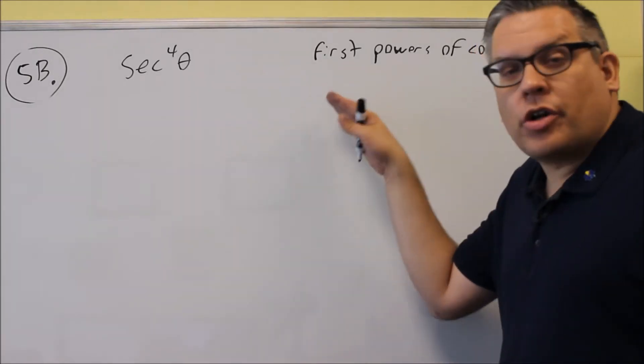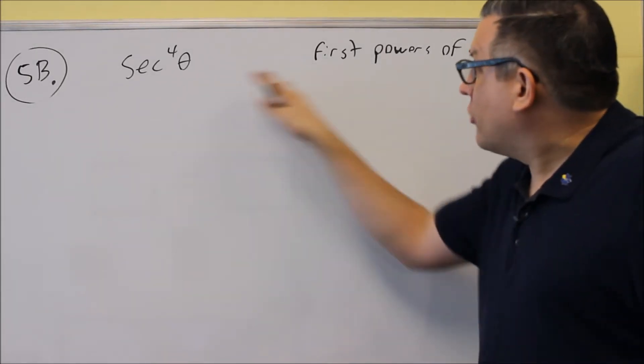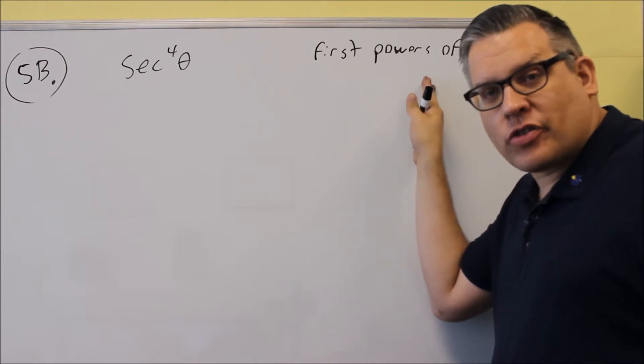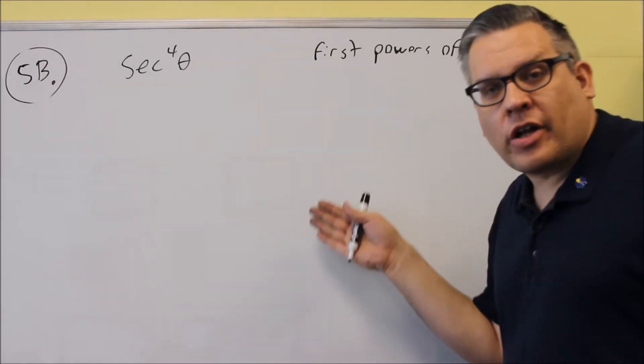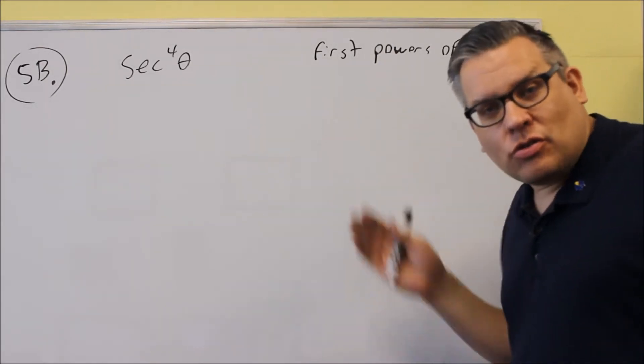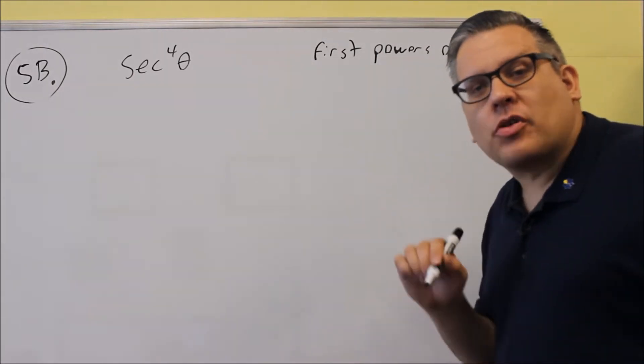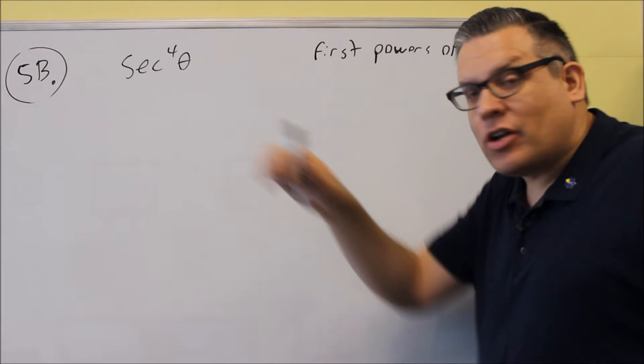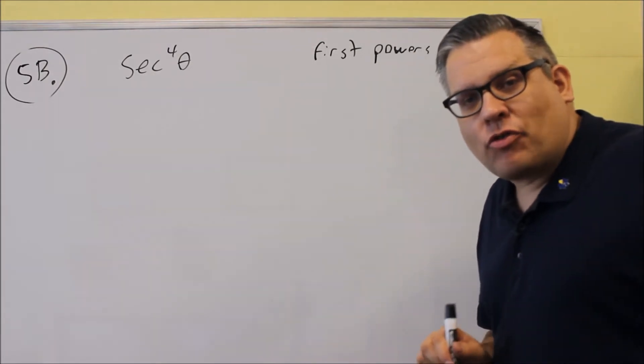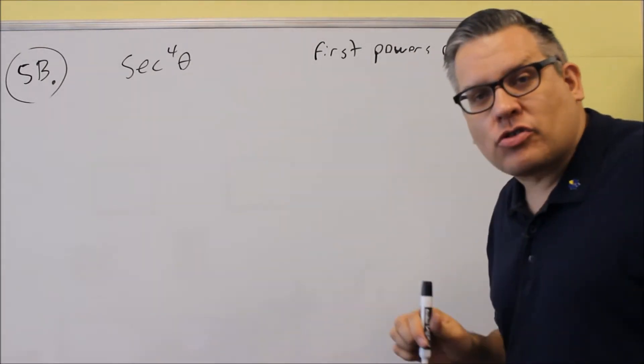Okay, for 5b, we have another one we want to use the power-reducing formulas to write this as first powers of cosine, meaning we've got to write our answer as cosine raised to the first power. We have a secant to the fourth. Now, none of our formulas that we have for power-reducing, we don't have any for a secant. So before we put those in, we're going to have to first use an identity.